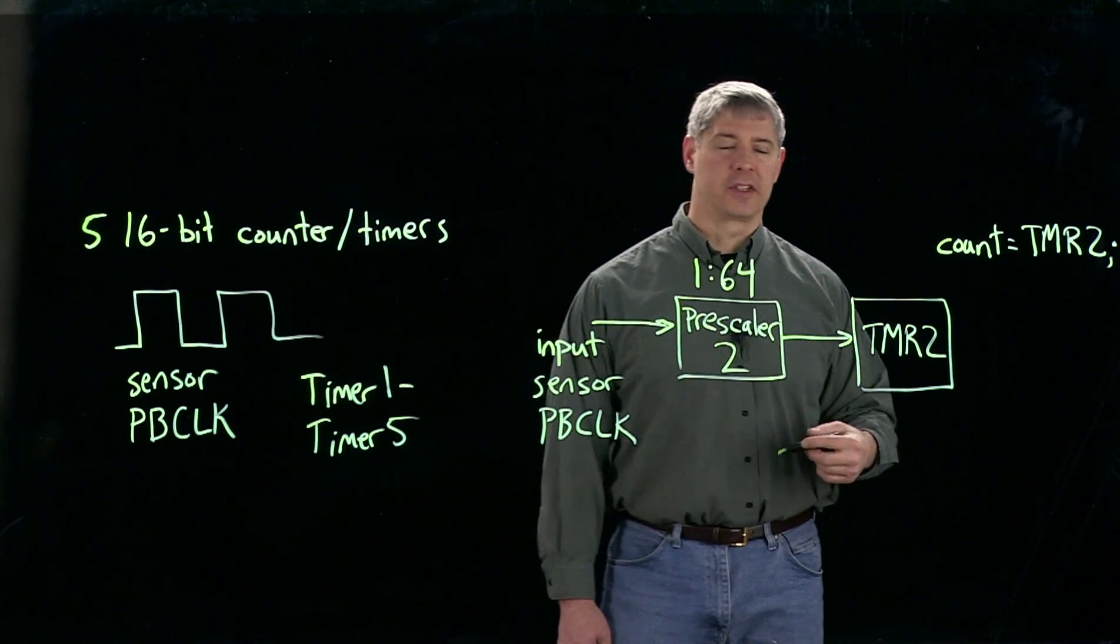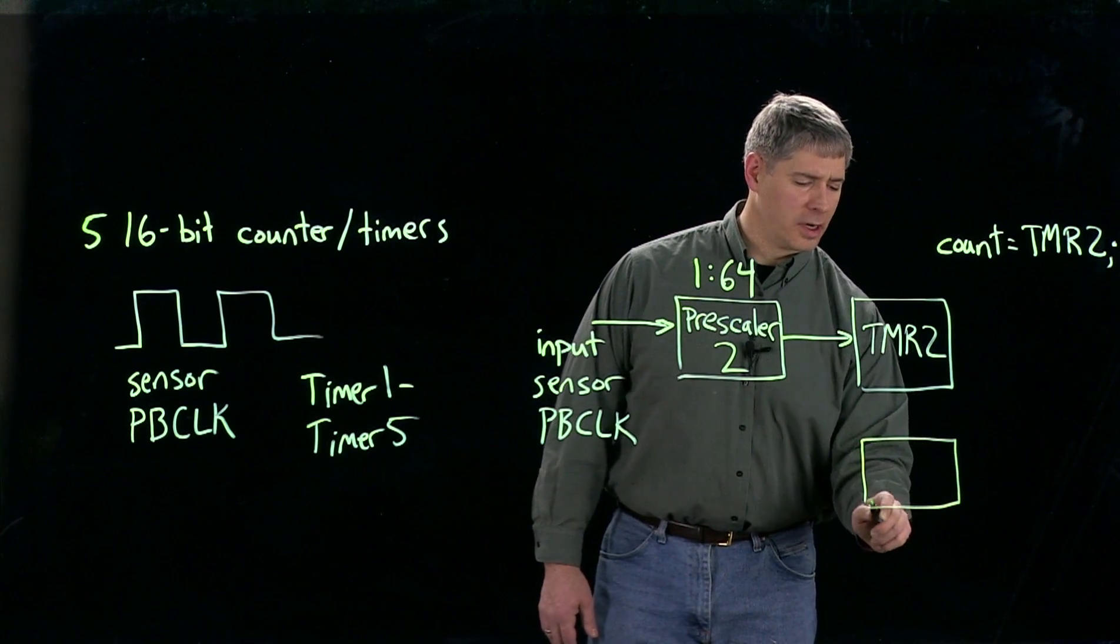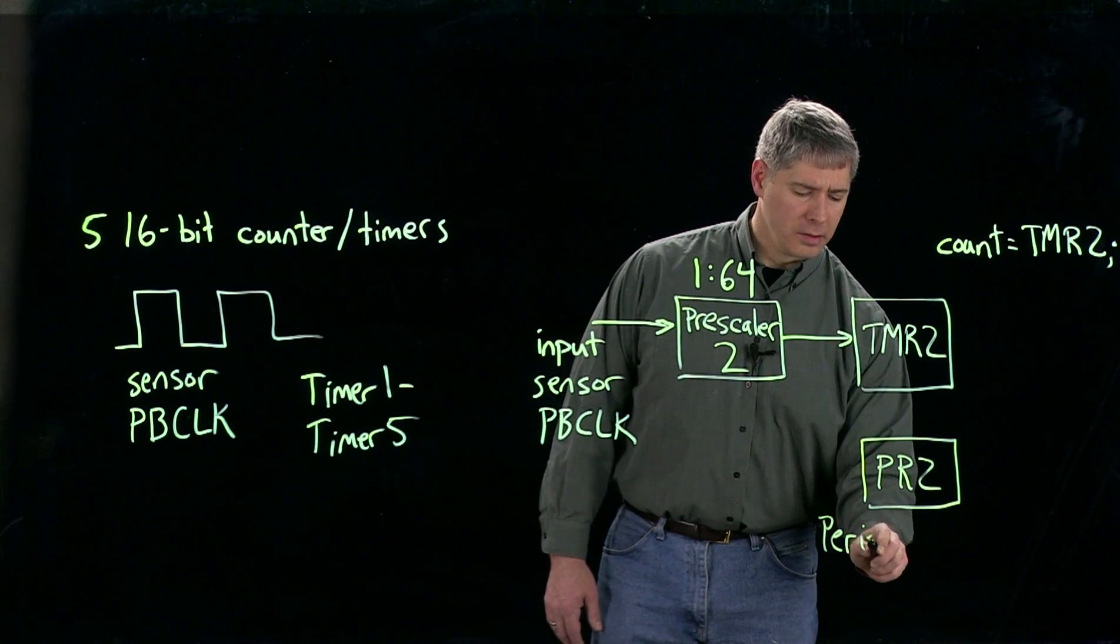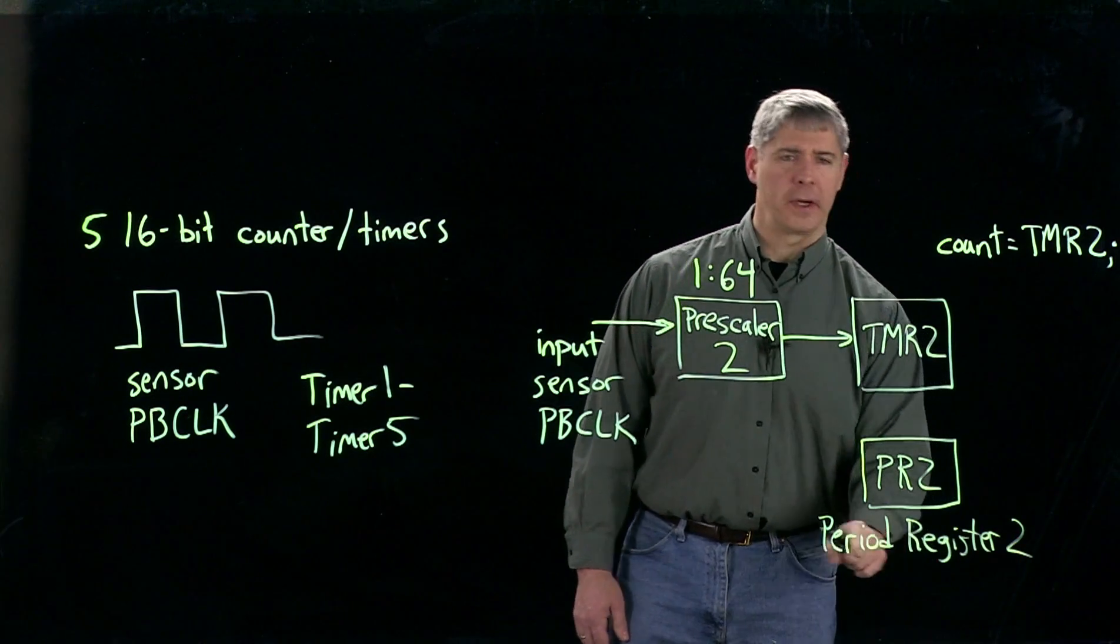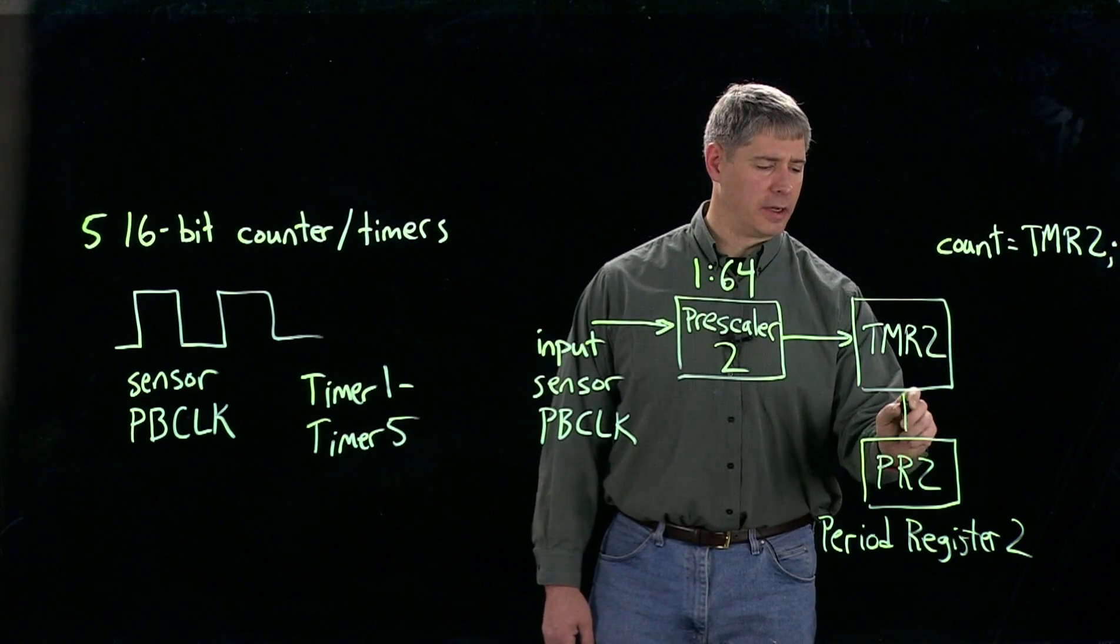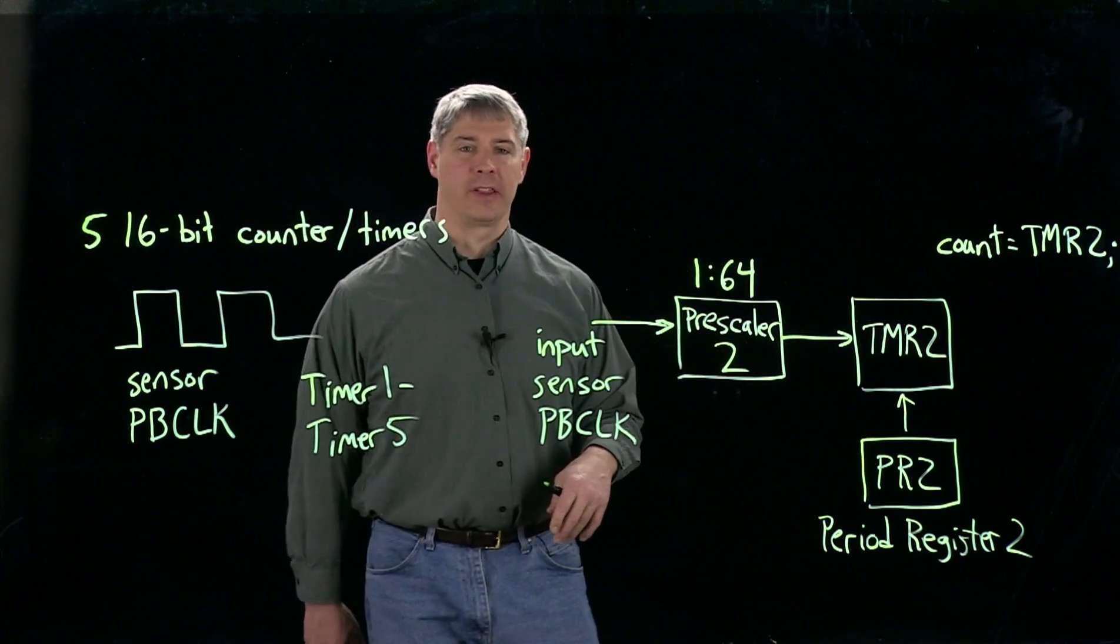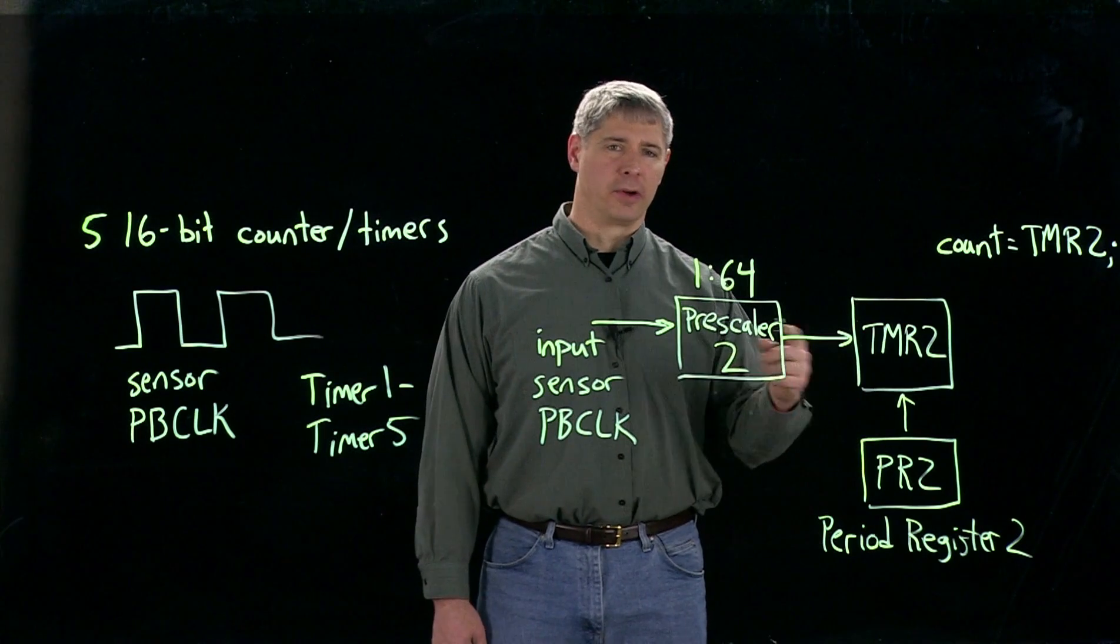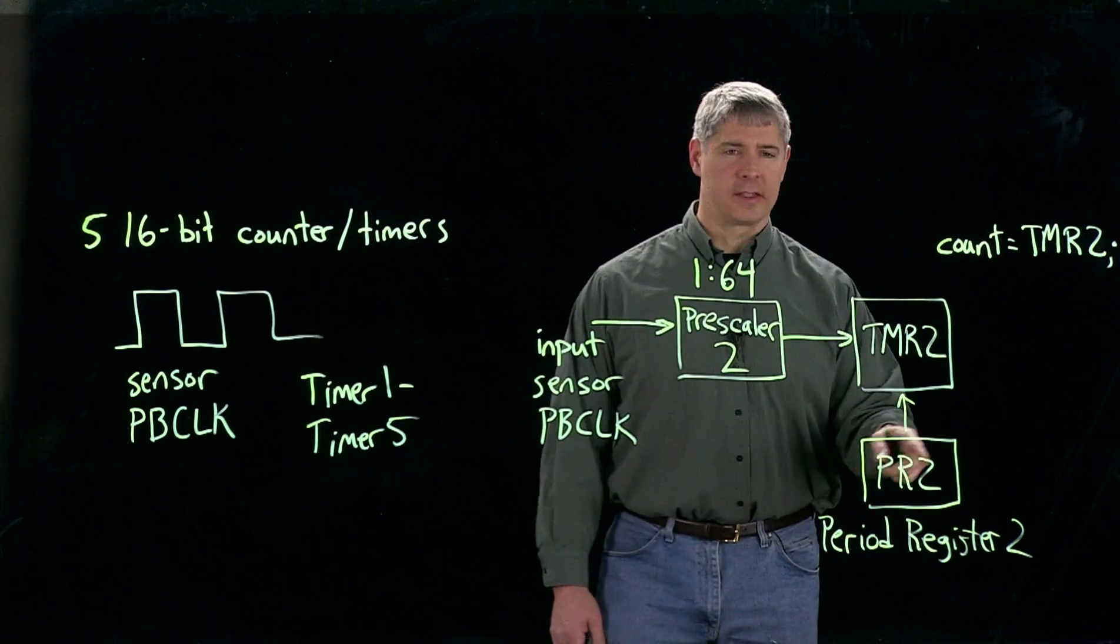We can make it roll over at some other value besides 65,000 and some. And we do that with another register, PR2. This stands for period register. Here, period refers to the period between rollovers of the counter. So that's an input here. Now if we put a load into the PR2, the value of 30,000 for example, now timer 2 is going to count up from 0 to 30,000. And then on the next tick, it's going to roll over to 0 again. It won't count all the way up to 65,000 or 2 to the 16 minus 1. So this is one thing that we can do.